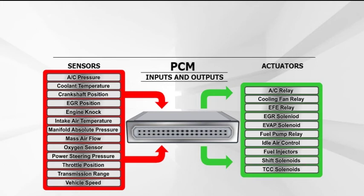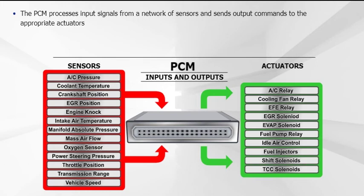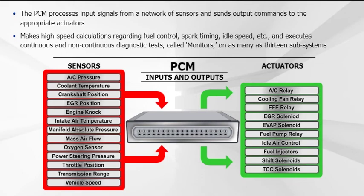The PCM processes input signals from a network of sensors and sends output commands to the appropriate actuators. In addition to making high-speed calculations regarding fuel control, spark timing, idle speed, etc., the PCM performs both continuous and periodic diagnostic tests, called monitors, on as many as 13 subsystems.